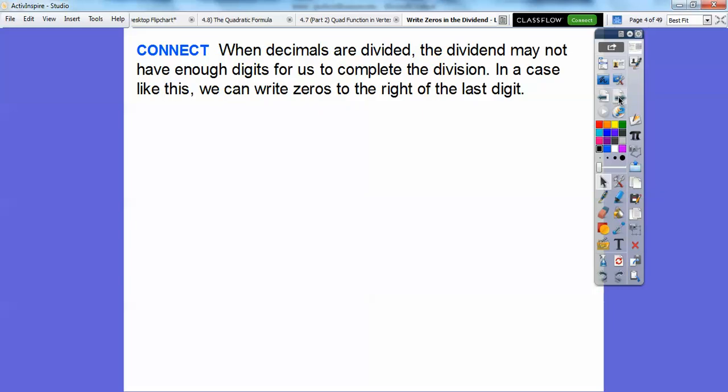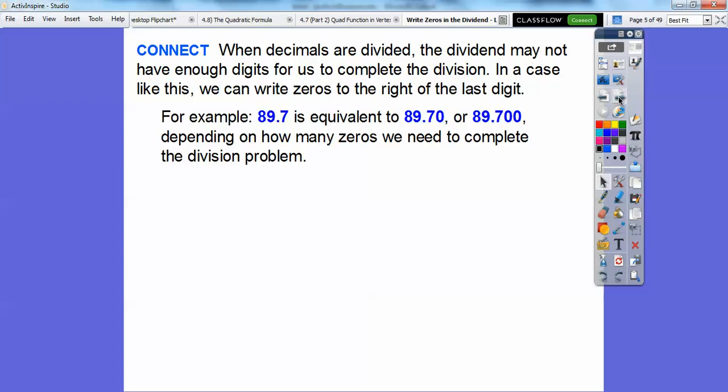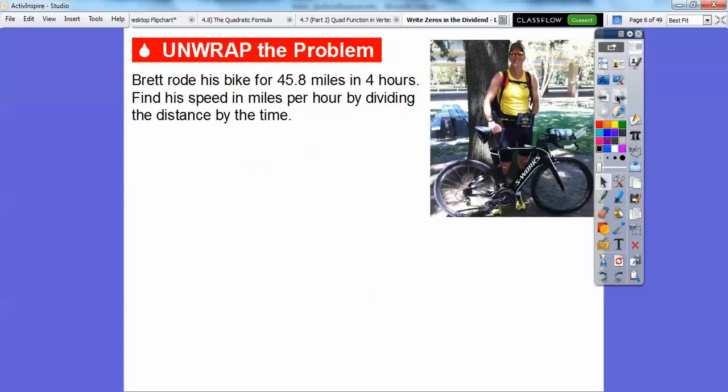So when decimals are divided, the dividend may not have enough digits for us to complete the division problem. In cases like this, we can write zeros to the right of the last digits. For example, 89.7 is equivalent to 89.70 or 89.700. It just depends on how many zeros you're going to need to complete your division problem. Before, we always wrote it as a remainder or as a mixed fraction. We'll talk about all of that here.